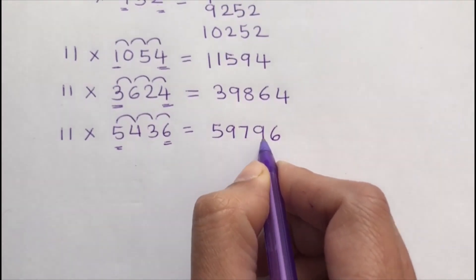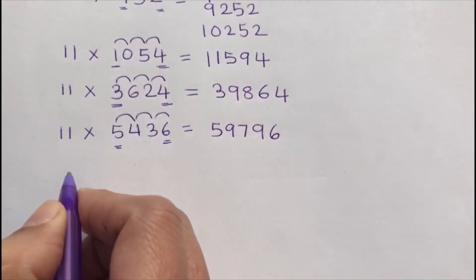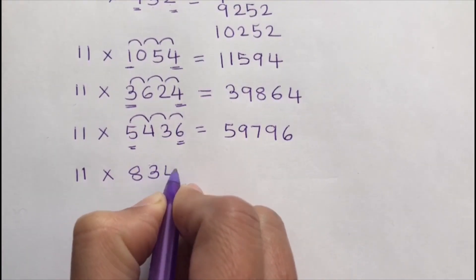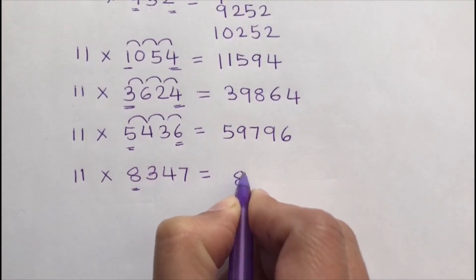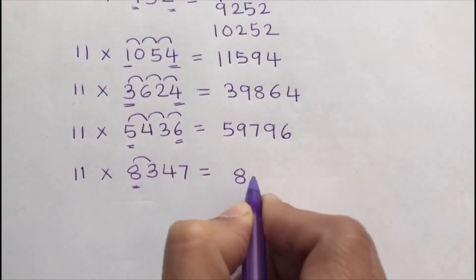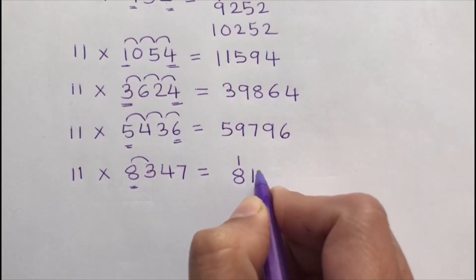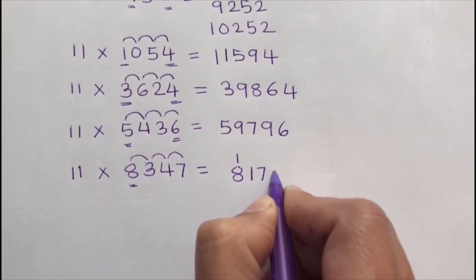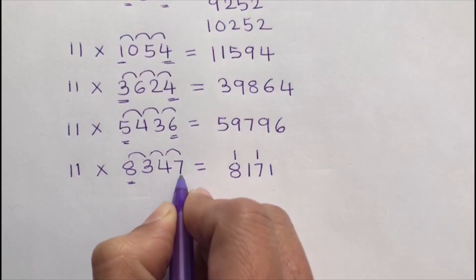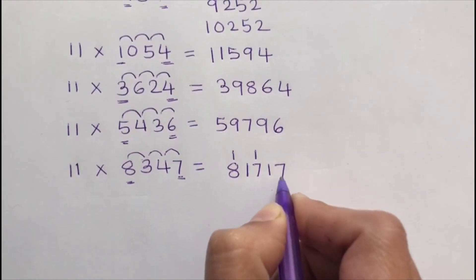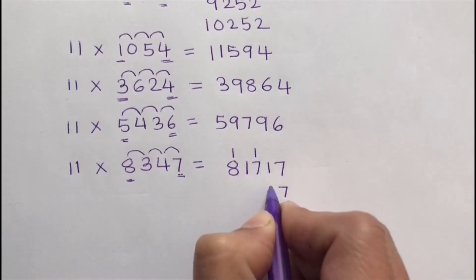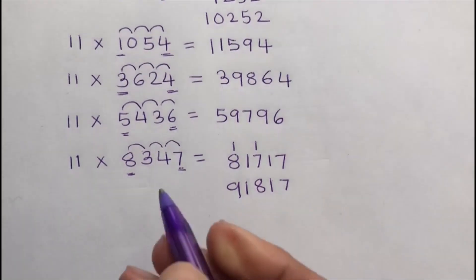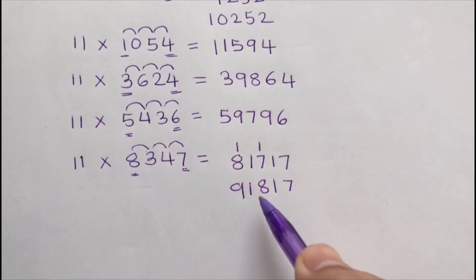The last example: 11 times 8347. The first digit is 8, so I write 8. Add 8 and 3, which gives 11, so I write 1 and carry 1. Next, 3 plus 4 is 7. Then 4 plus 7 is 11, so I write 1 and carry 1. The last digit is 7. Now adding the carries: 7 plus 1 is 8, and 8 plus 1 is 9. So 11 times 8347 equals 91817.